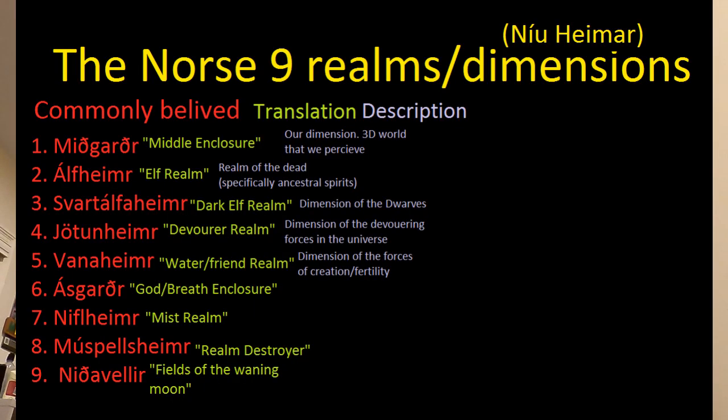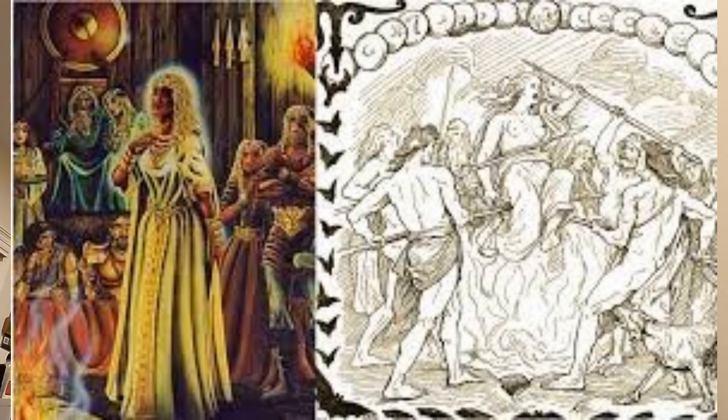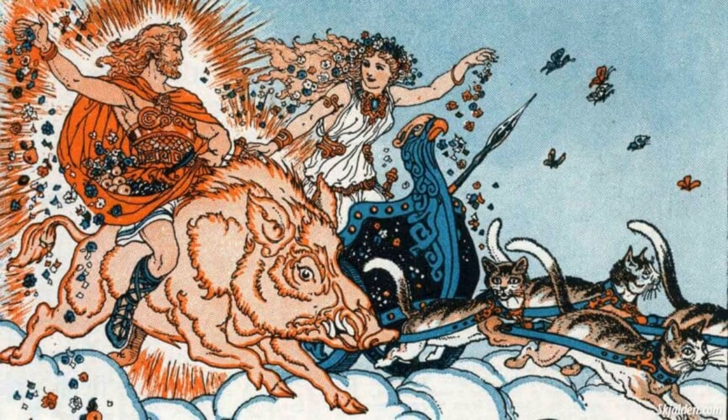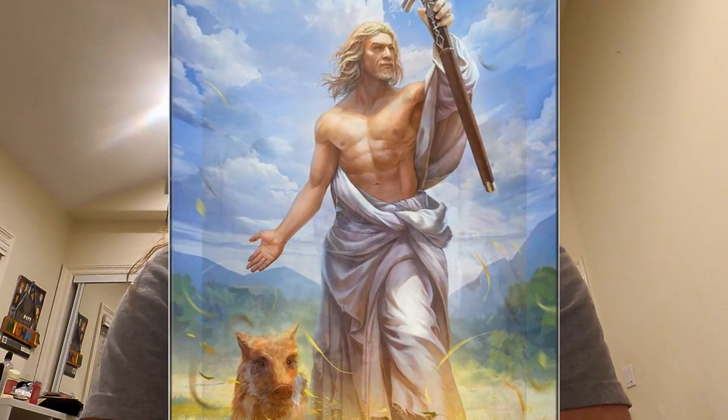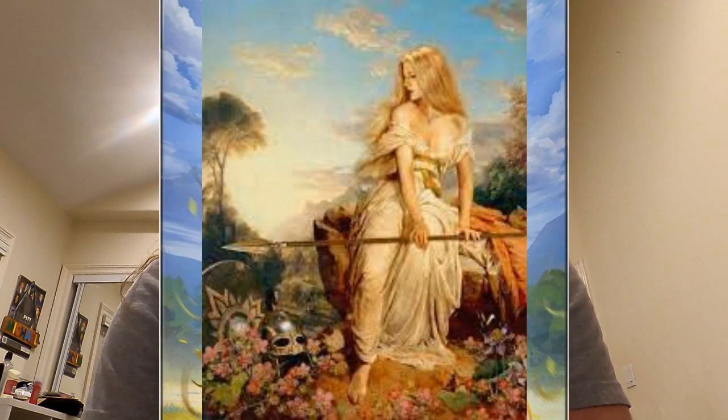Number five: Vanaheim. You all know what the Vanir are — they are the gods associated with fertility and creation: Freyr, Freya, Njord, things like that. These are the deities that represent the various forces of reproduction and creation. The spiritual entities living in this dimension are the ones who use their power to help our world with creation, getting pregnant, growth of crops, all kinds of birth of life in general.